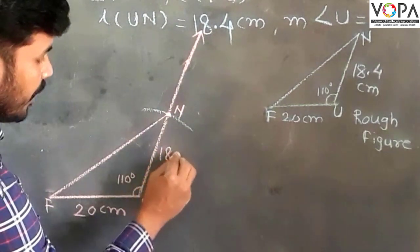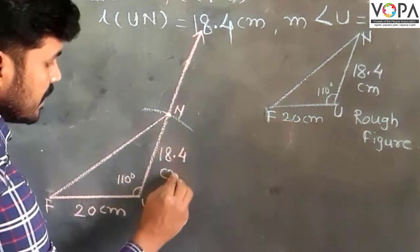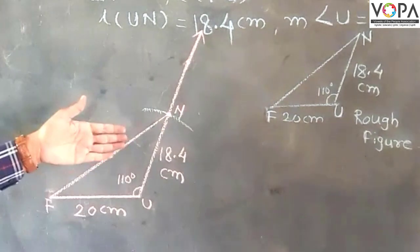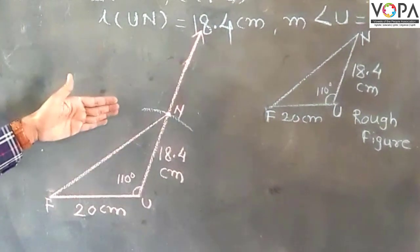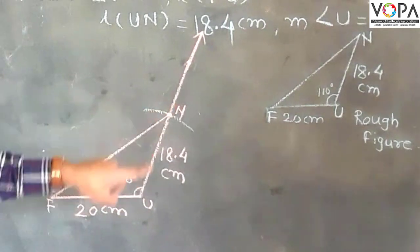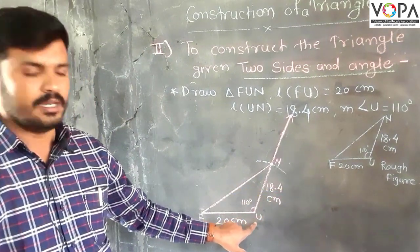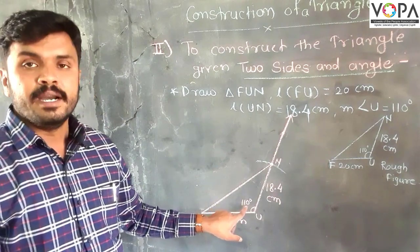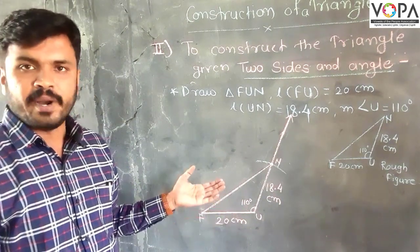Now UN is equal to 18.4 centimeters. So this is our main figure of the obtuse angle triangle. In this triangle, FU is equal to 20 centimeters, NU is equal to 18.4 centimeters, and the measurement of angle U is equal to 110 degrees. Please solve the practice set. Thank you.